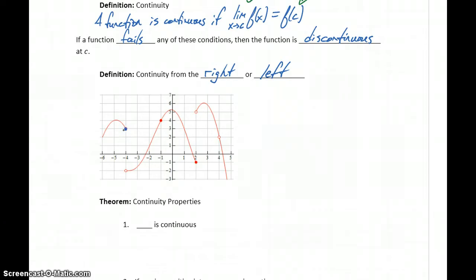When X equals negative four, our function value is three. So our function is defined there. We have that first condition met.